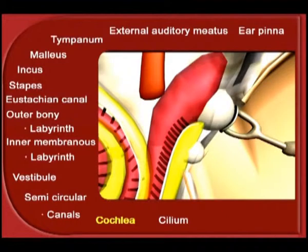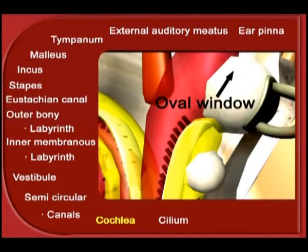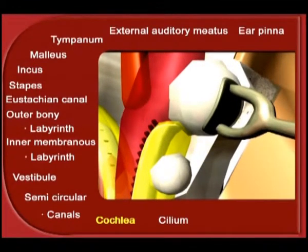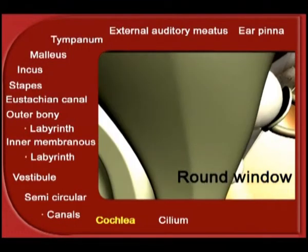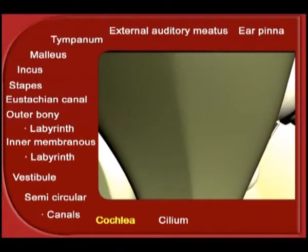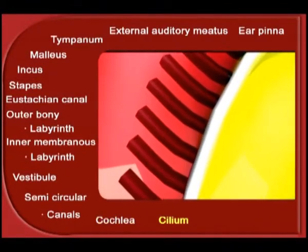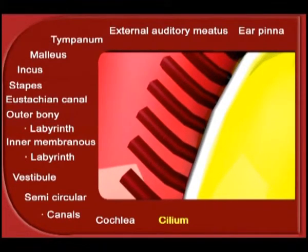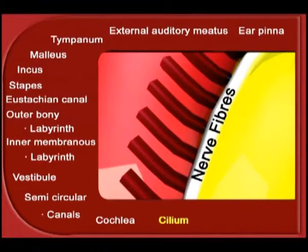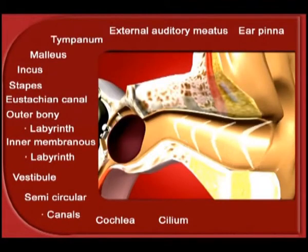The mouth of the upper chamber is called the oval window, as it is oval-shaped, and it is closed by the foot of the stapes. The mouth of the lower chamber is called the round window, as it is round-shaped, and it is closed by a membrane. The receptor cells which sense sound are located on the basilar membrane, and hair-like cilia project from each receptor cell into the endolymph of the upper chamber.